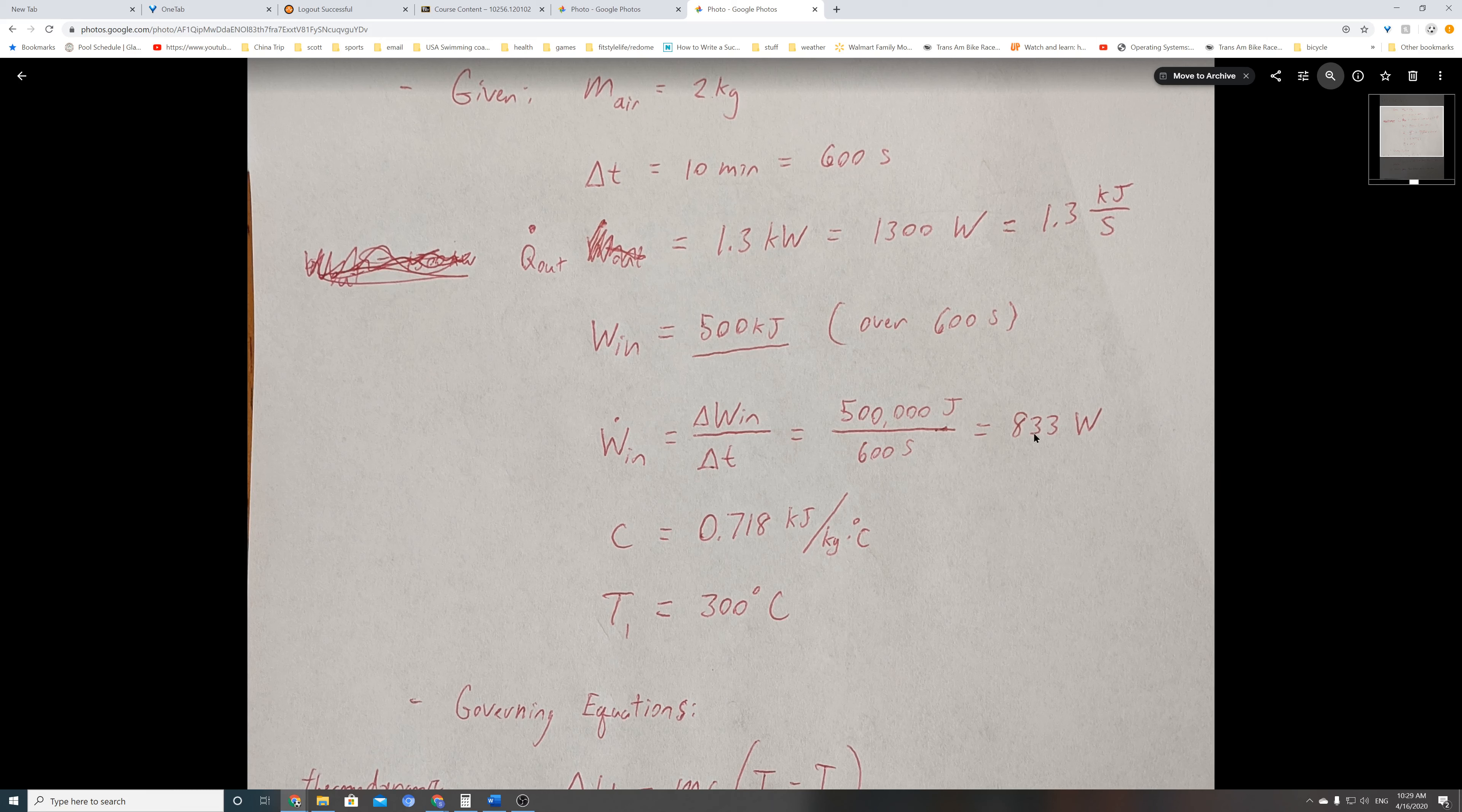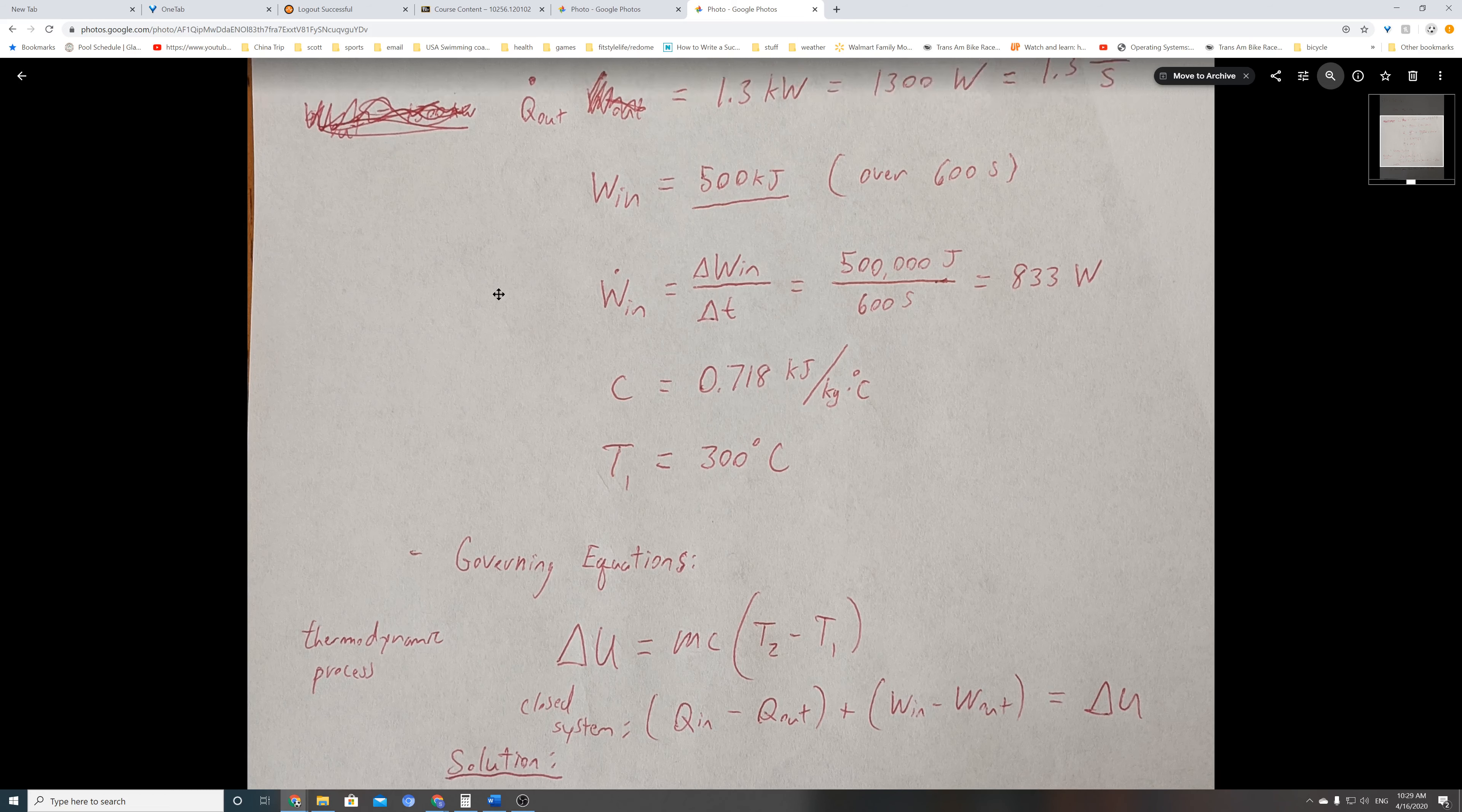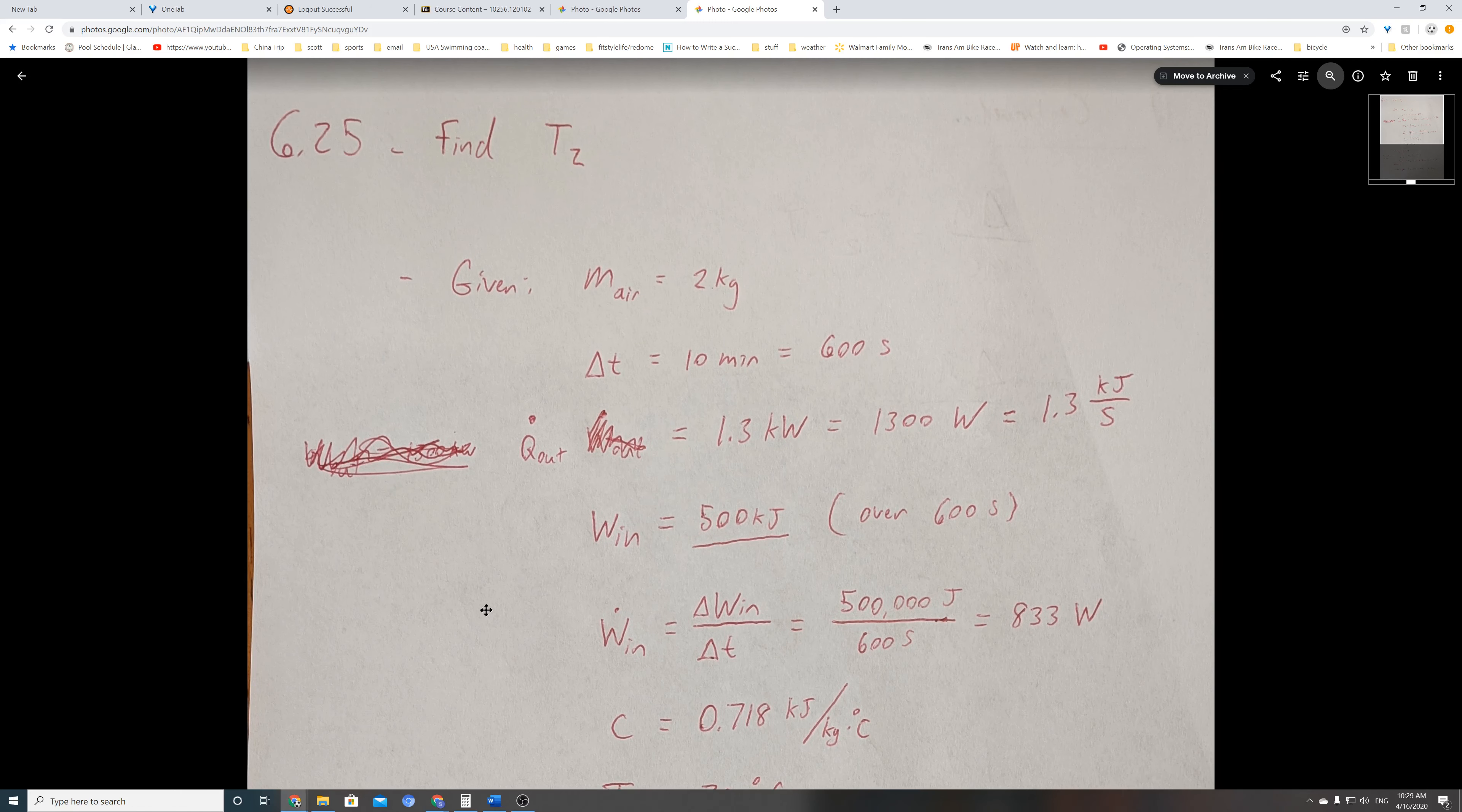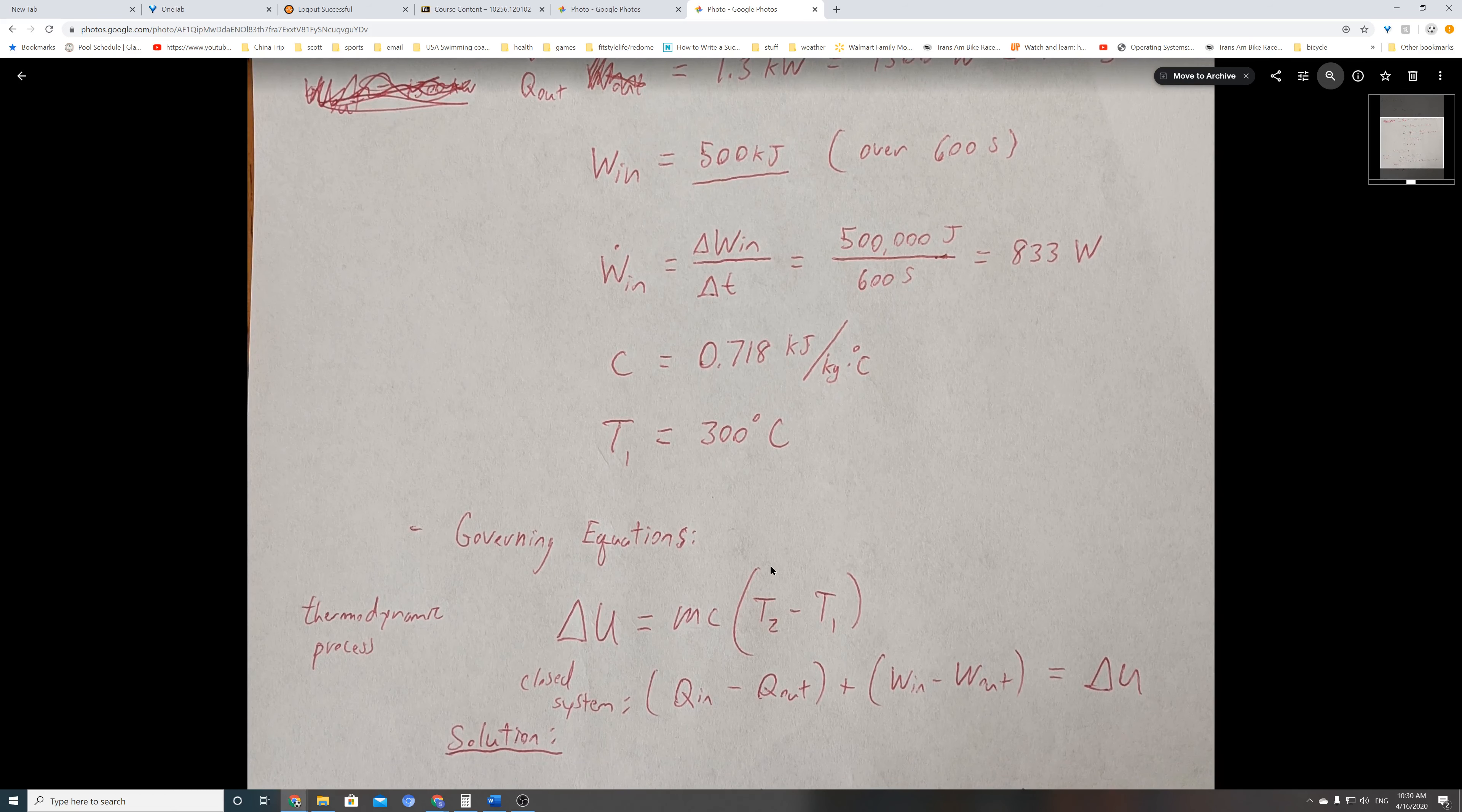That much work over 600 seconds. I also wrote it in terms of work in, which was 833 watts. We have the specific heat of air, which is 0.718 kilojoules per kilogram degrees C, and our initial temperature of 300°C. This is everything that's given.